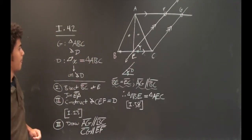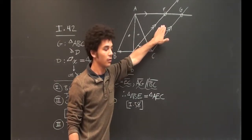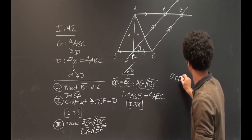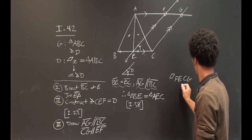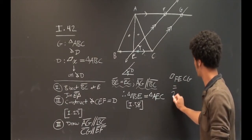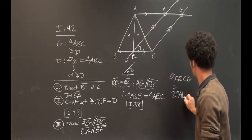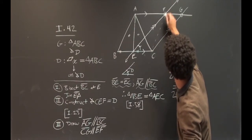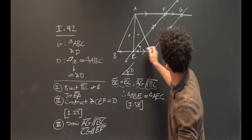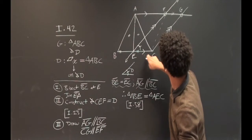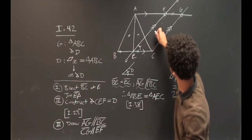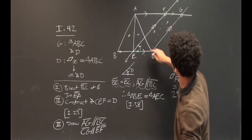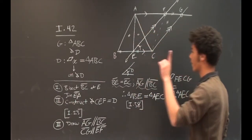These two triangles ABE and AEC are equal in area. Furthermore, parallelogram FECG is equal to twice triangle AEC. I can imagine cutting this parallelogram into two parts along diagonal EC — they are equal to each other, giving a common base EC. So triangle AEC equals triangle EFC equals triangle FCG, which makes the parallelogram twice the area of the small triangle AEC.